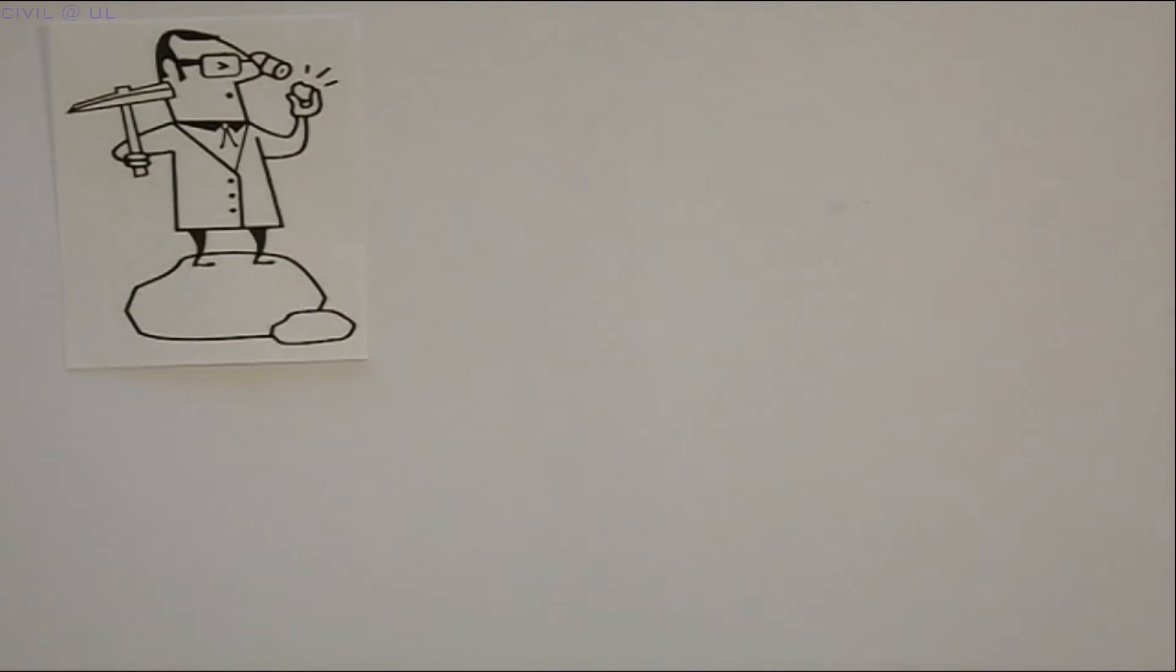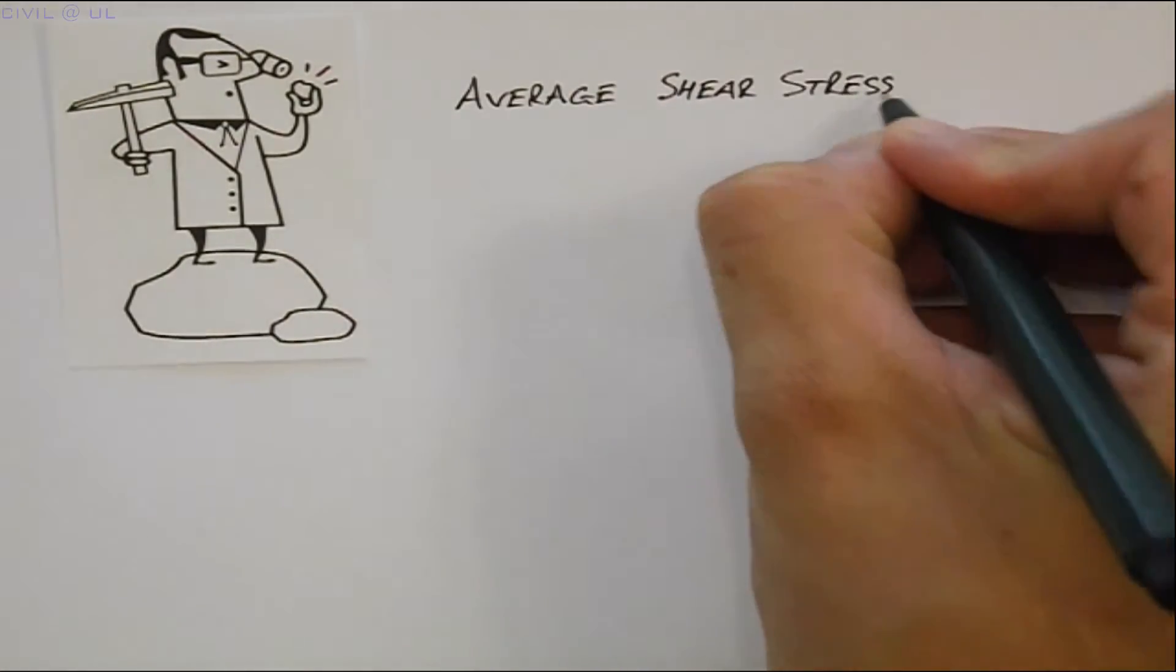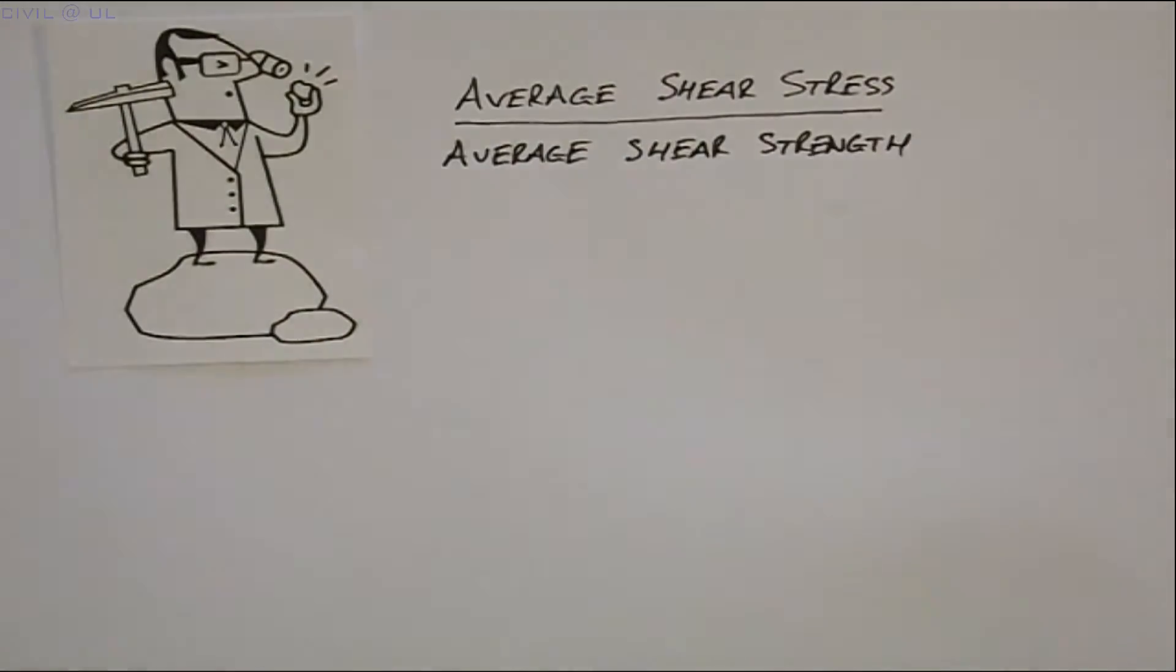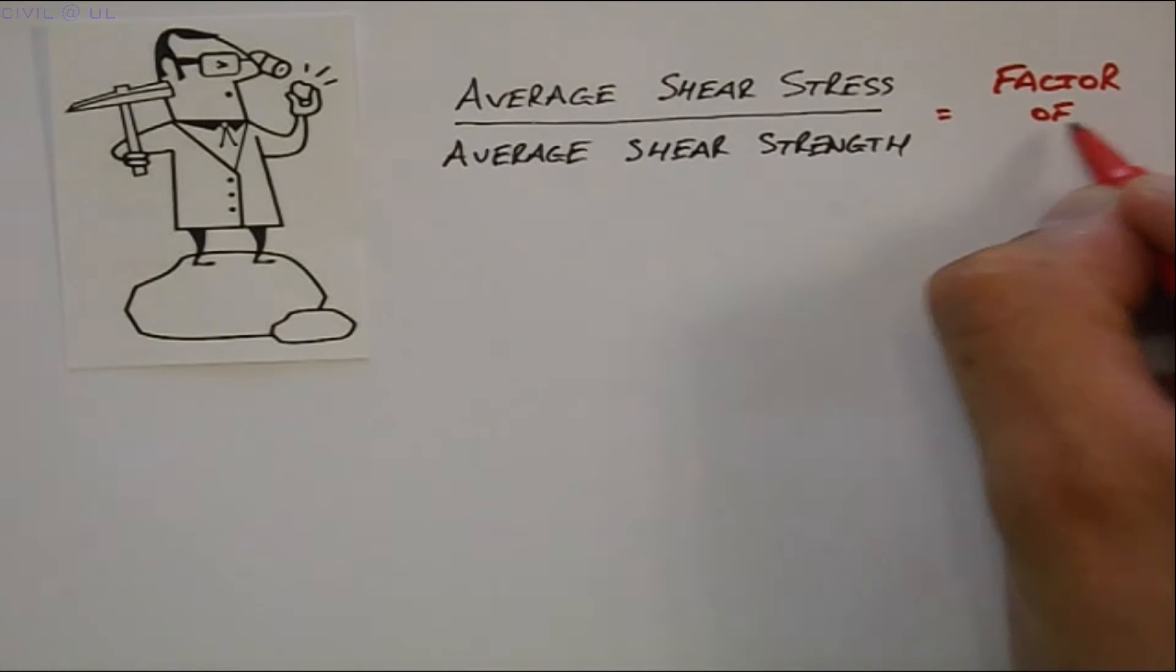The practicing geotechnical engineer must frequently determine the level of safety of an existing or planned earth structure. This is typically done by calculating the ratio of the average shear stress applied by the structure divided by the average shear strength. This ratio is known as the factor of safety.